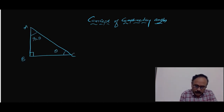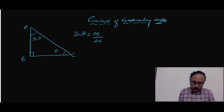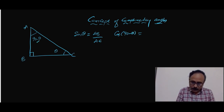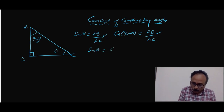In this triangle, if you consider C as theta, then A must be 90 minus theta. Now if you write sin θ, it is perpendicular by hypotenuse, therefore AB by AC. Now if you look at cos(90 minus θ), for this angle the base is BC and hypotenuse is AC.